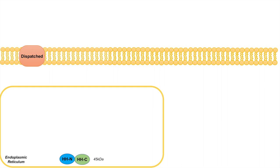The precursor protein has two portions: an N-terminal portion and a C-terminal portion. These portions have functions in and of themselves. The HHC, or the hedgehog C-terminal portion of the protein, has a particular function in that it actually adds a cholesterol to the hedgehog N-terminal portion of the protein. As this protein becomes processed within the endoplasmic reticulum, the hedgehog C-terminal portion gets cleaved off in an auto-proteolytic cleavage process.